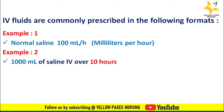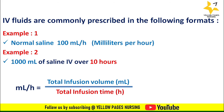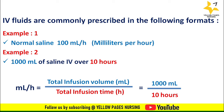We need to calculate ml per hour because in order to document hourly intake this data may be necessary. This is calculated by a simple formula: ml per hour = total infusion volume (ml) ÷ total infusion time (hours). Considering example two: 1000 ml ÷ 10 hours = 100 ml per hour. This will be the hourly intake.